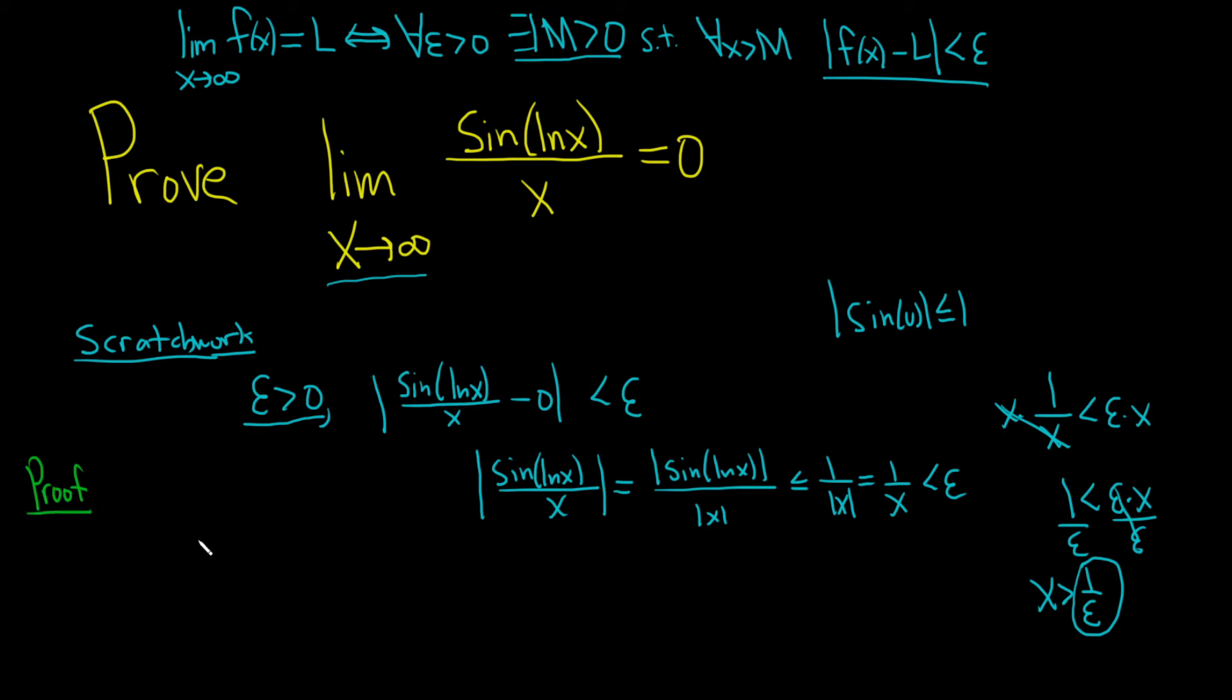So proof. We'll start our proof by letting epsilon be greater than 0. That'll satisfy this condition here. So let epsilon be greater than 0. Now we have to find a positive number. Well, via the Archimedean Principle, we can say choose a number m bigger than 1 over epsilon. And again, 1 over epsilon makes sense because epsilon is greater than 0.